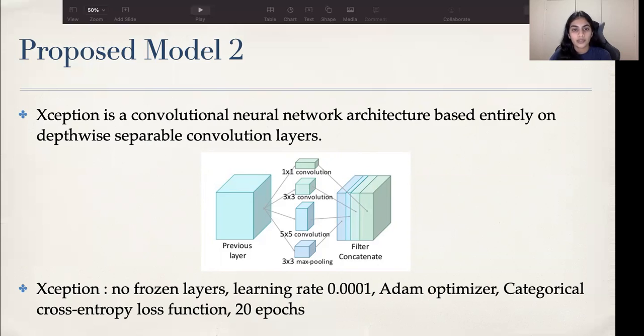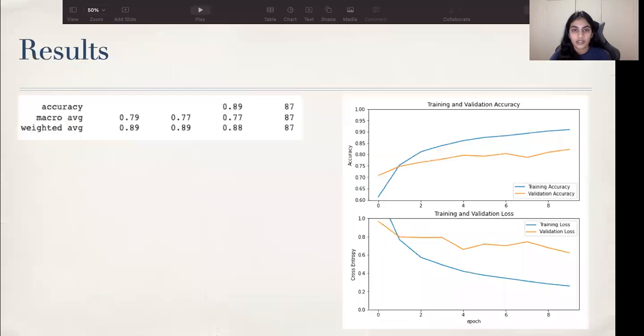We implemented Xception with no frozen layers and using a learning rate of 0.001, with Adam optimizer and categorical cross-entropy as a loss function. We achieved a validation accuracy of 0.89 with this model. This model performs better because it is able to capture different features from distinct sizes of the convolution filters, which is a crucial part for fine-grained image classification.